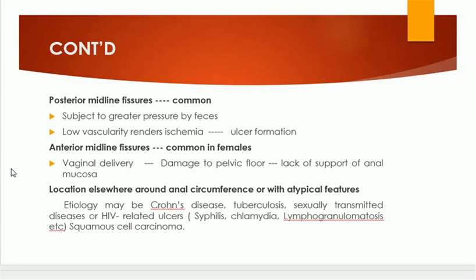We usually divide anal fissure into primary or secondary. When the location is elsewhere around the anal circumference or there are atypical features, we suspect this is probably a secondary anal fissure. Secondary anal fissure means there is some underlying disease that results in the formation of anal fissures.